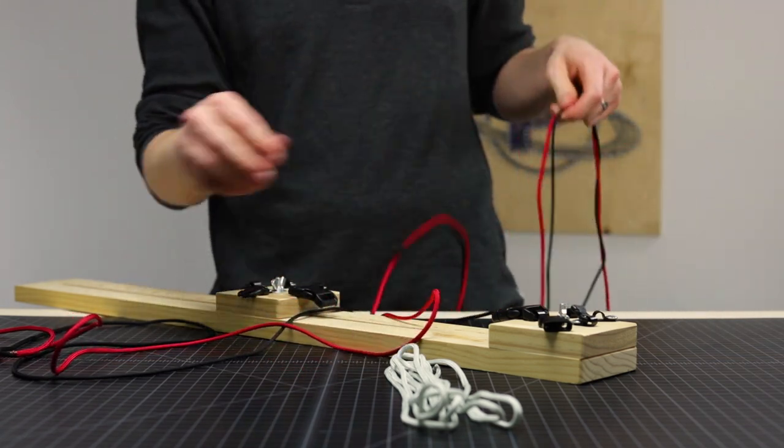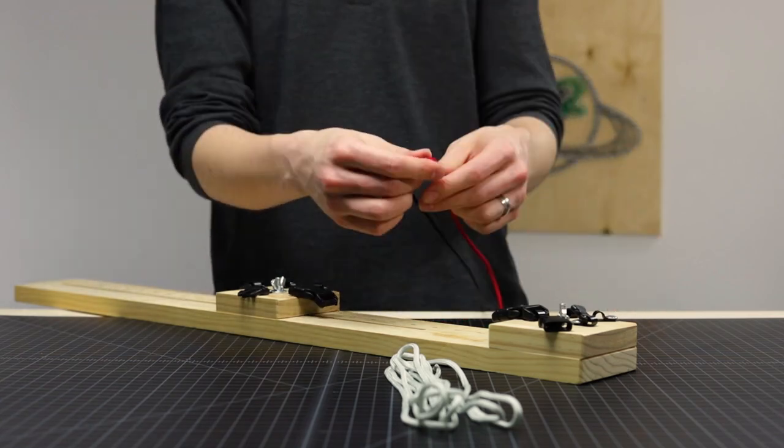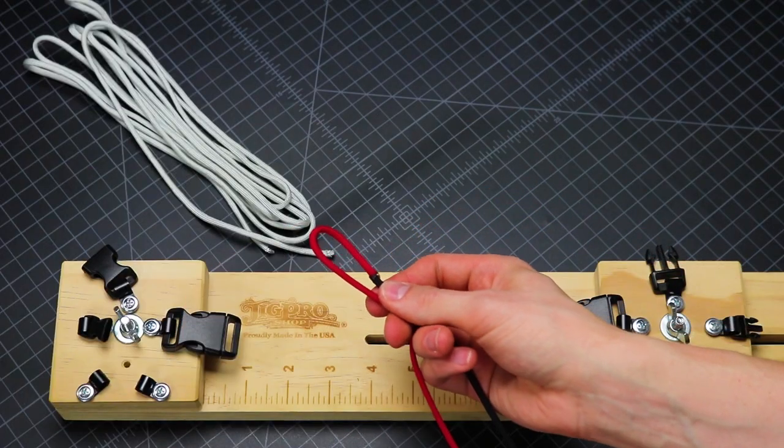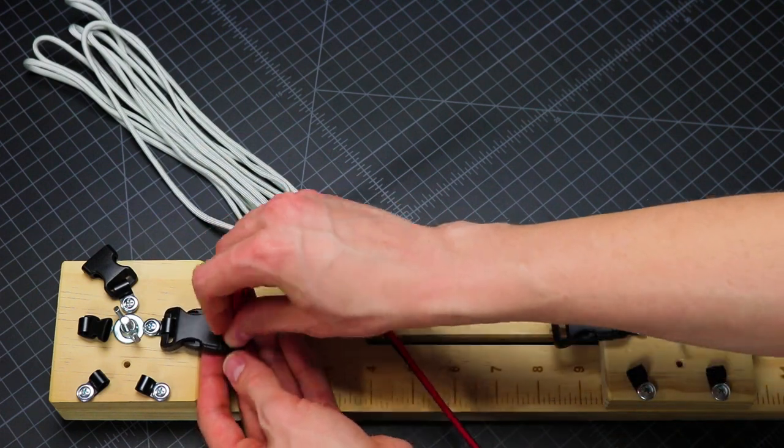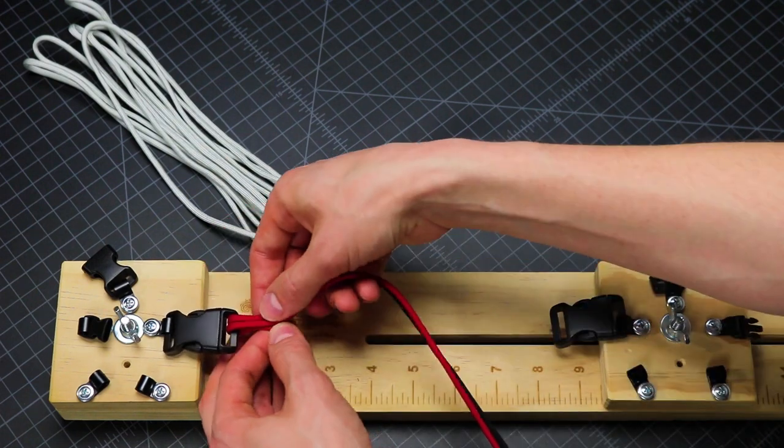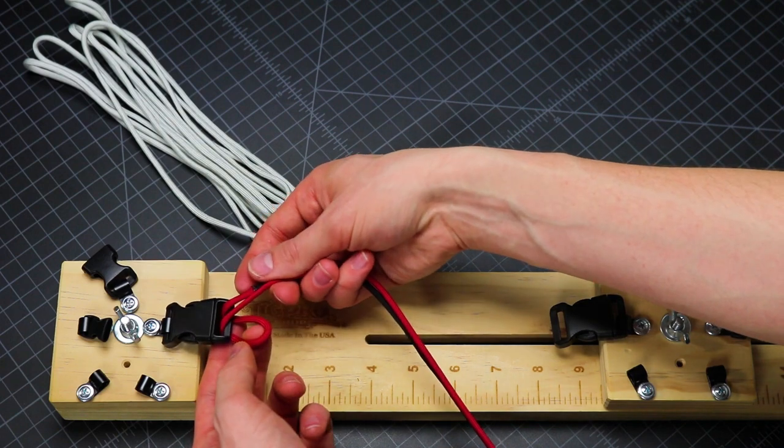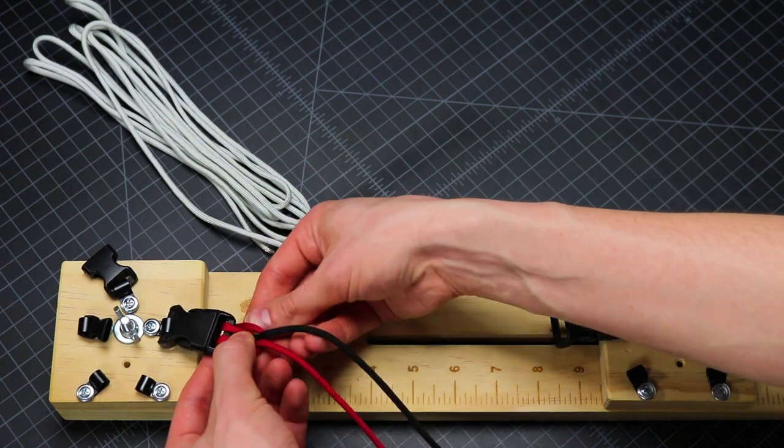And then nearby the end where you melted your cords together, just go off center one direction. I'm going to go to the red, and we're going to be making a cow hitch on the end on the buckle. So put the loop through and then stick your ends through that loop.